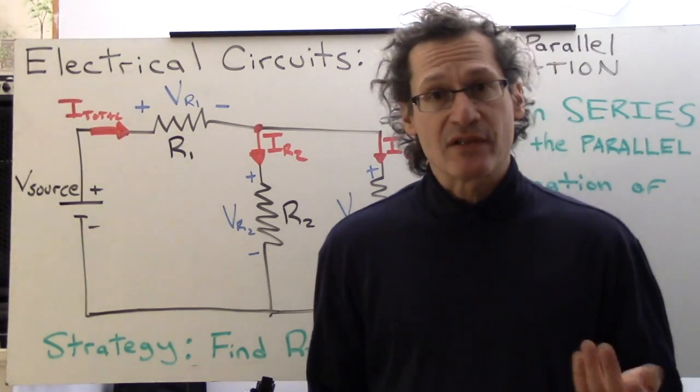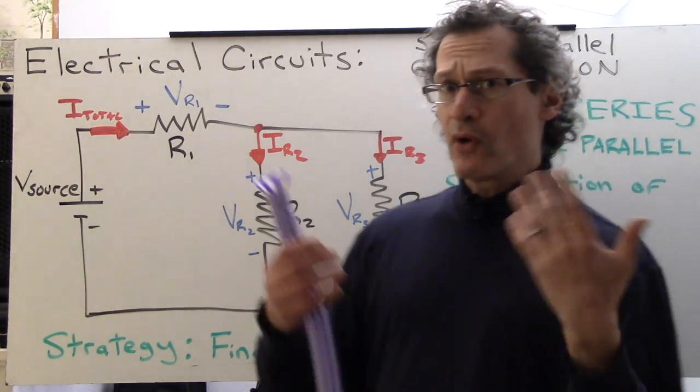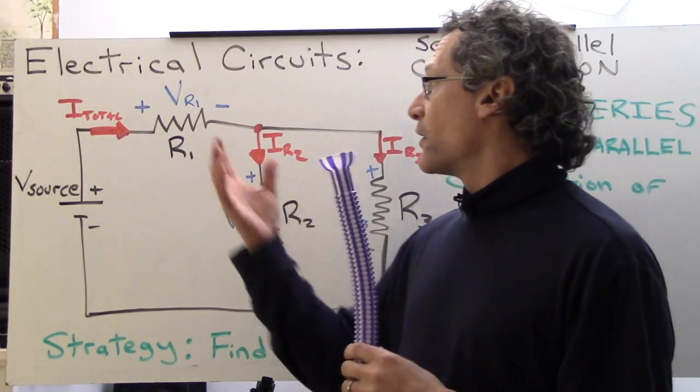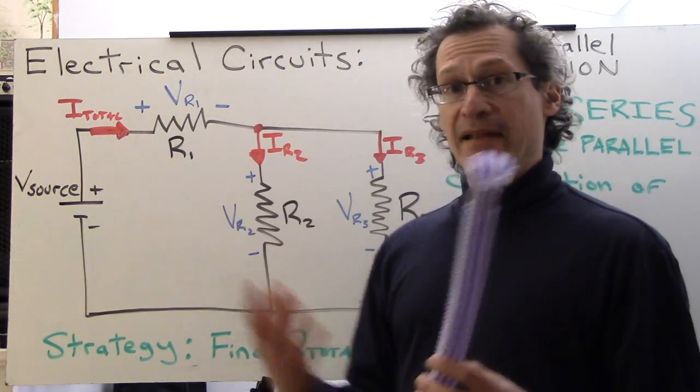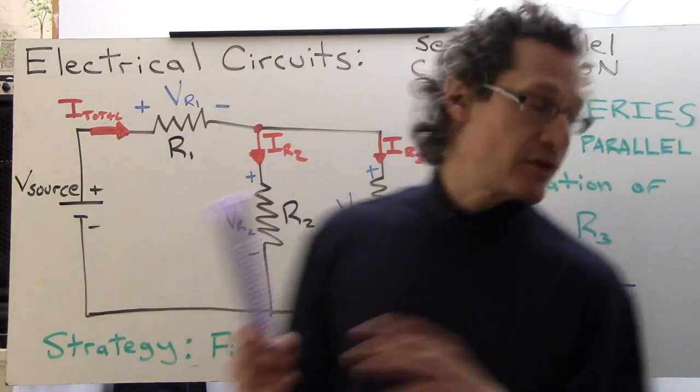Now if you're analyzing these circuits, one of the strategies that you should employ is to first find R total. And so what we're going to do first is look at the fact that series combinations always add resistances together. So we're going to add R1 to the parallel combination of R2 and R3.